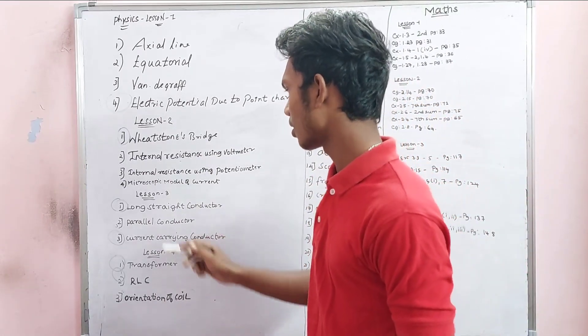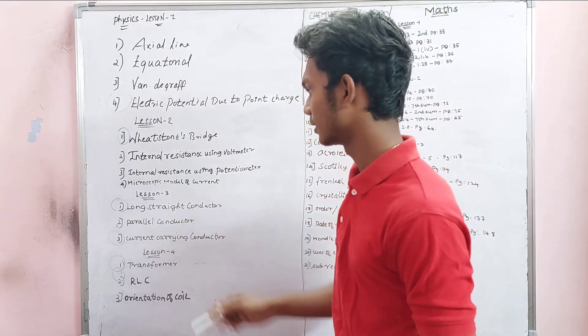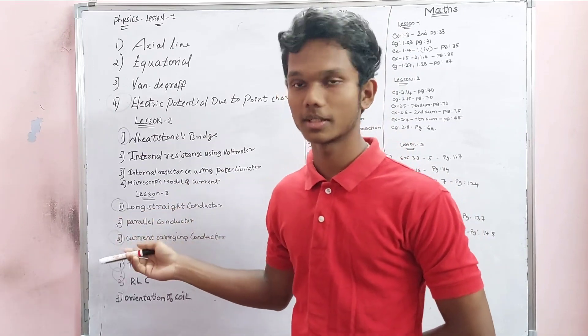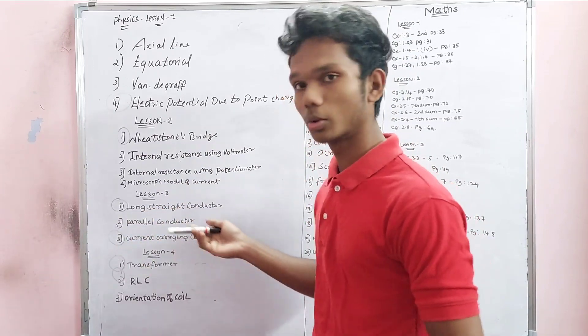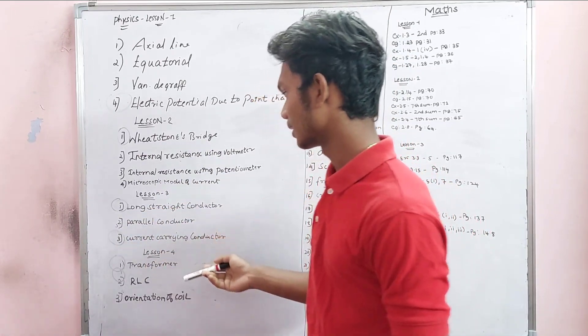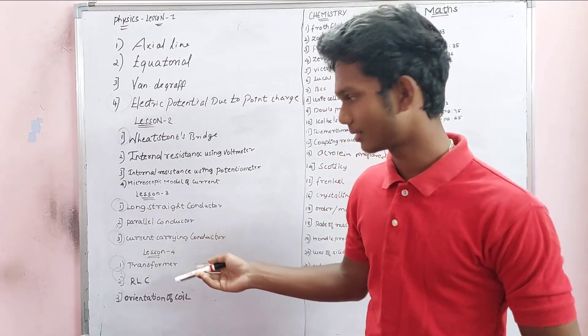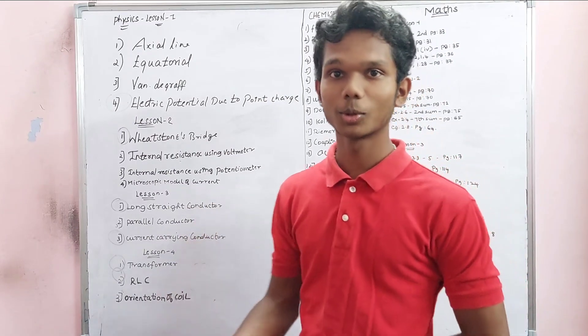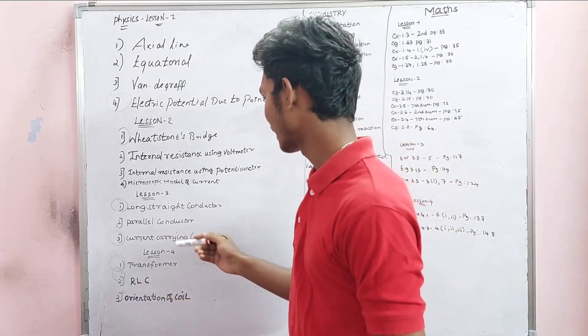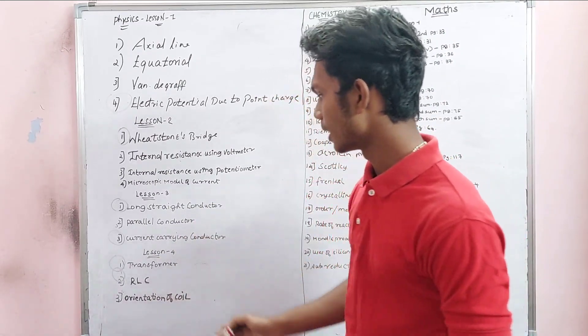Lesson 3 is long straight conductor — it's very important. And parallel collector — it's easy to do. Current carrying collector is also covered in Lesson 3.